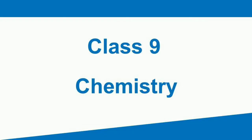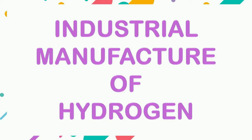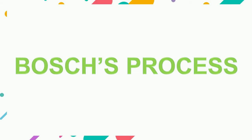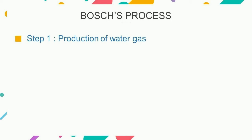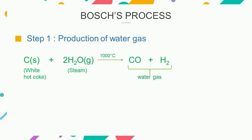Hello everyone. Continuing chapter Hydrogen, in this video we are going to study the industrial manufacture of hydrogen. Hydrogen is manufactured in industries on a large scale from steam by the Bosch process. The first step of the Bosch process is the production of water gas. Water gas is a mixture of carbon monoxide and hydrogen gas, formed when superheated steam at 1170 degrees Celsius is passed over white hot coke at 1000 degrees Celsius. This reaction is endothermic.